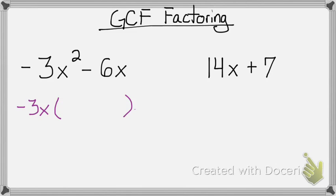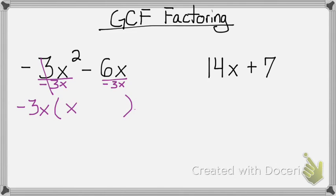To figure out what goes inside the parentheses, divide negative 3x into both. You'll be left with x, and negative 6x divided by negative 3x gives you positive 2.